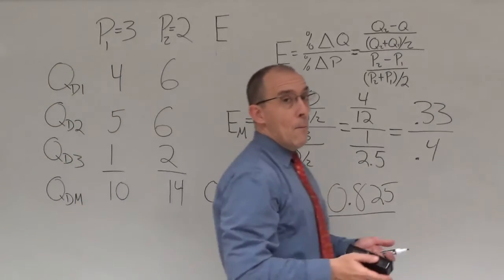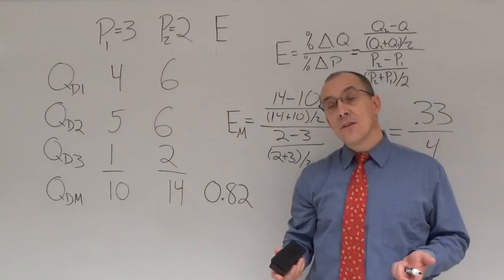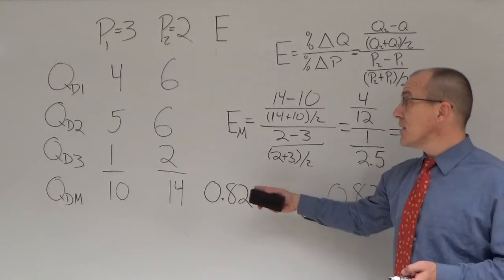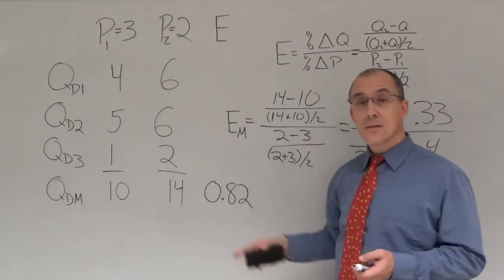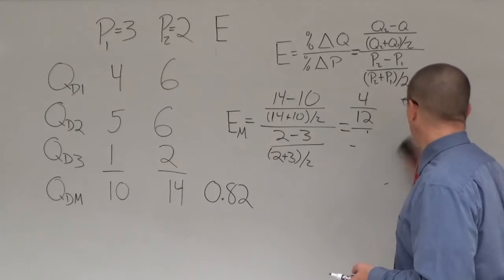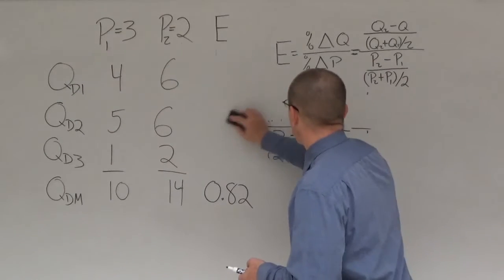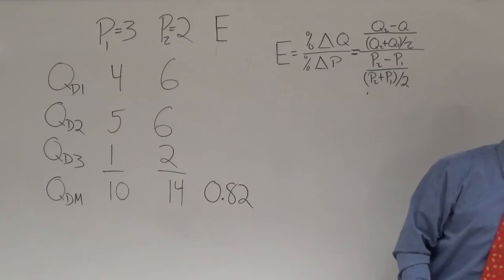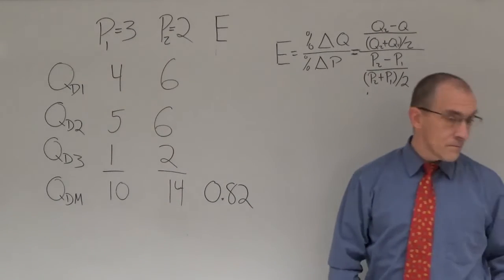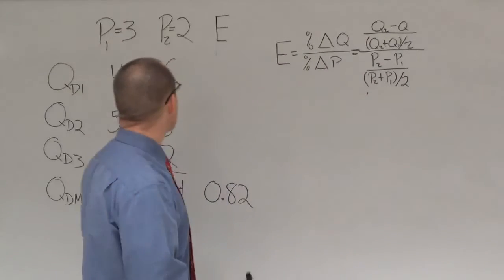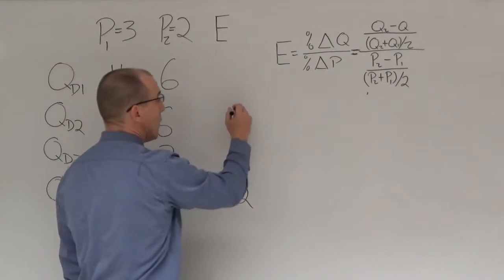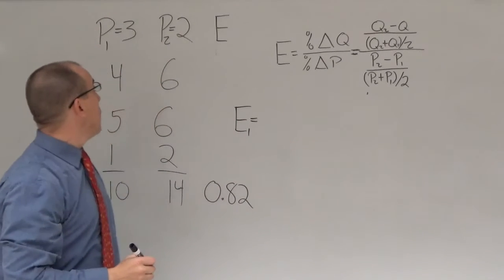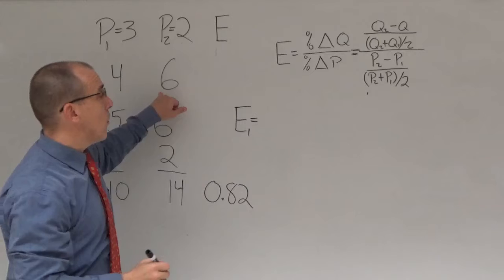I'll put that into my chart: market elasticity is 0.82. But the elasticities for the different individuals won't be this, because as you can see they all had different responses to the changes in price. Let's go back and work through our different individuals.